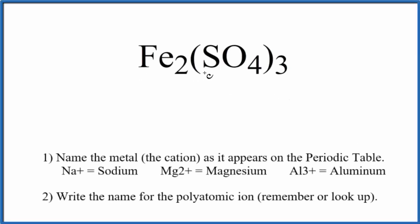To write the name for Fe₂(SO₄)₃, first thing we have to recognize is this SO₄ here. This is called the sulfate ion. It's a polyatomic ion.